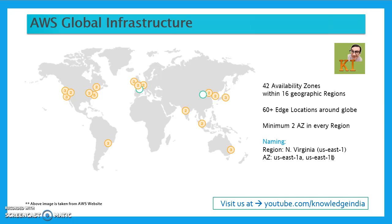From a high availability perspective, AWS recommends that when you are deploying any solution — for example deploying your servers — you should deploy in a minimum of two availability zones within a region. That way, if one availability zone goes down due to a natural disaster or some other issue, your application continues to run from the other availability zone. Many AWS services have high availability built in, but for services where you need to architect it yourself, such as EC2 and RDS, you need to choose the option or architect it correctly to deploy in minimum two availability zones.